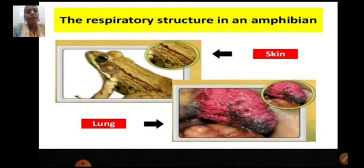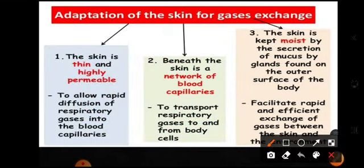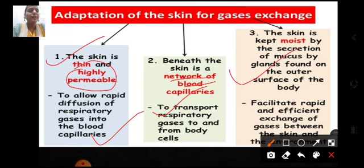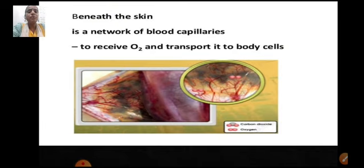The respiratory structure and breathing mechanism of amphibians: amphibians can breathe through both lungs and skin. Adaptations for gas exchange through the skin include: the skin is thin and highly permeable to allow rapid diffusion of respiratory gases into the blood capillaries beneath; beneath the skin is a network of blood capillaries to transport respiratory gases to and from body cells; the skin is kept moist by secretion of mucus by glands on the outer surface to facilitate rapid and efficient exchange of gases between the skin and the environment.